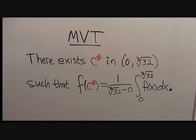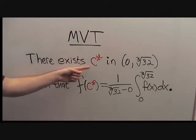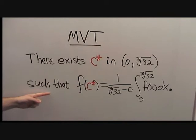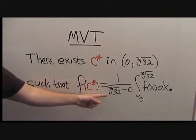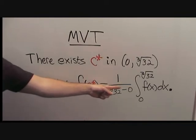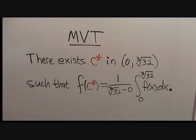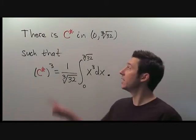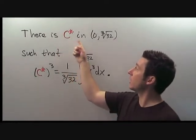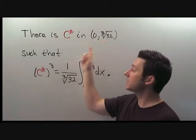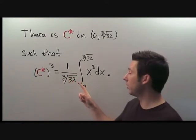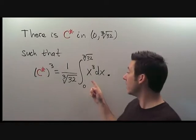The mean value theorem for integrals says there exists some number c star in the interval 0 to the cube root of 32, such that f of c star is equal to 1 over the length of the interval times the integral of f on the interval that we were given. All that remains is to fill in the formula for f. Therefore, our answer is: there is a number c star in the interval 0 to the cube root of 32 such that c star cubed equals 1 over the cube root of 32 times the integral from 0 to the cube root of 32 of x cubed dx.